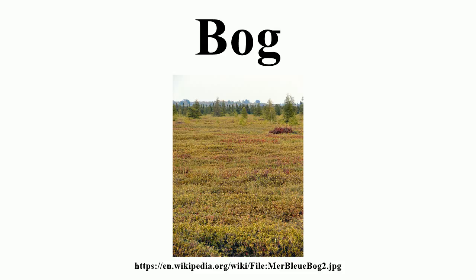A quaking bog, or schwingmoor, is a form of bog occurring in wetter parts of valley bogs and raised bogs, and sometimes around the edges of acidic lakes. The bog vegetation, mostly sphagnum moss anchored by sedges, forms a mass approximately half a meter thick floating over water or very wet peat. White spruces are also common in this bog regime. Walking on the surface causes it to move, and larger movements may cause visible ripples on the surface, or may even make trees sway. In the absence of disturbance from waves, the bog mat may eventually cover entire bays, or even entire small lakes.